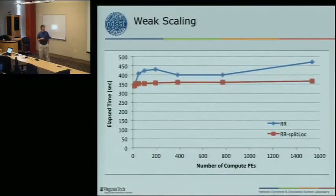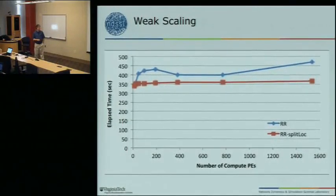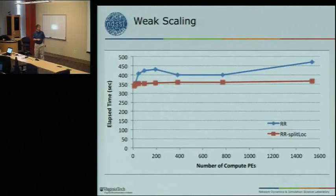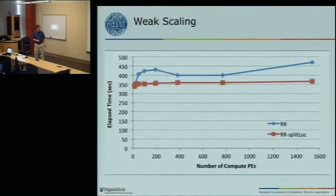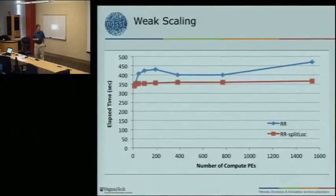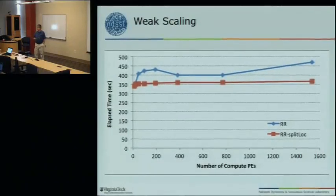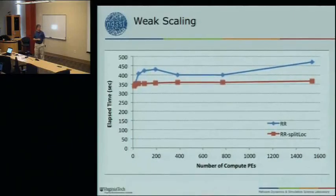The weak scaling result is fairly uninteresting but positive. The difference between the two lines is due to the static partitioning I'll talk about in a moment. Basically it's fairly flat all the way out to 1600 PEs. We expect, based on the strong scaling results, that it will keep going — we just haven't had time to run those experiments.